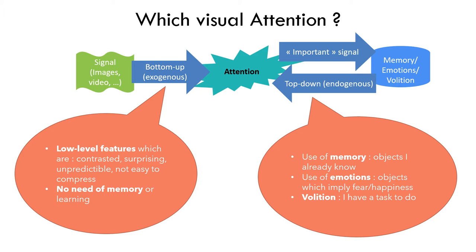Let's go now into some details of attention. Attention is a competition actually between two components: one which is called bottom-up or exogenous, and the other one which is called top-down or endogenous. The bottom-up part will take the signal coming from the outside world — images or video for us — and will extract low-level features which are basically different from normality: contrasted, surprising, unpredictable, not easy to compress. For those features, there is no need for memory or learning.